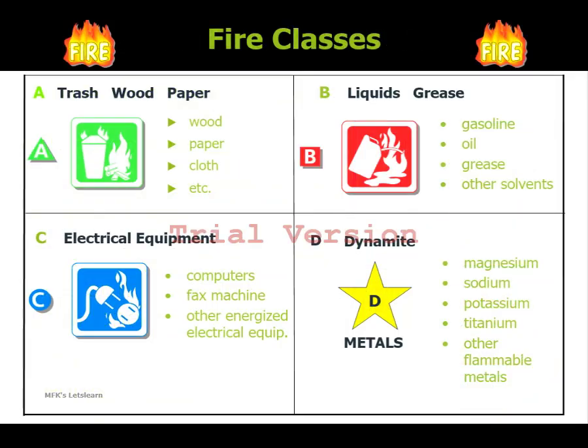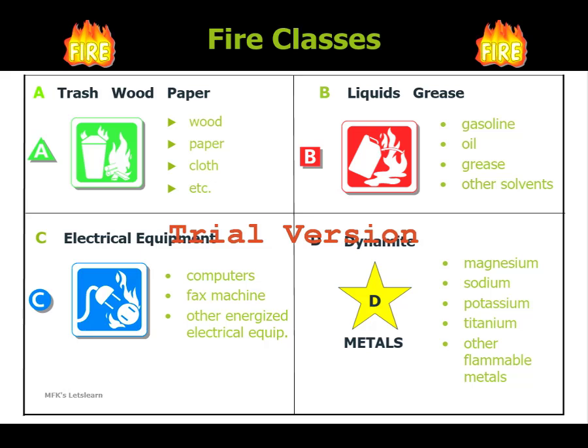That's all about fire and what needs to be present for healthy combustion, or how to suppress combustion. Now, what are the classifications of fire, or fire classes? Mainly there are five classes of fire: Class A, Class B, Class C, Class D, and Class K.